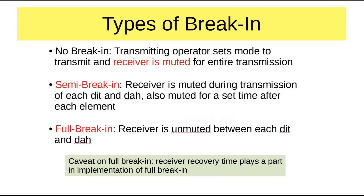Now, there are types of break-in — three that are important in ham radio. There's another form important for commercial operators, but hams don't use it. The no-break-in mode: a transmitting operator sets the mode on his transmitter to transmit, and the receiver is muted for the entire transmission, until the operator changes it back to receive. That's no break-in — and by the way, that is the classical way it was done.